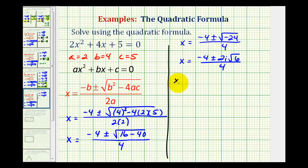is to write this as x equals negative 4 divided by 4, plus or minus 2i√6 divided by 4. So we divided each term in the numerator by 4. And now we simplify again.